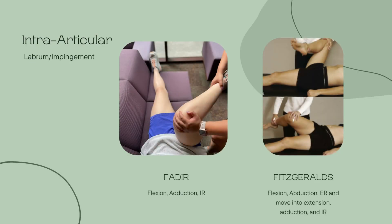Labrum and impingement tests — what's unique about these two is that labrum and impingement are different, but they will have the same positive test. Clinical presentation will look a little different, but special tests and treatment are going to be the same. The two tests we're looking at are Fader and Fitzgerald's. Fader involves flexion, adduction, and internal rotation as pictured, and a positive test is reproduction or increase in anterior groin pain, lateral hip pain, or clicking.